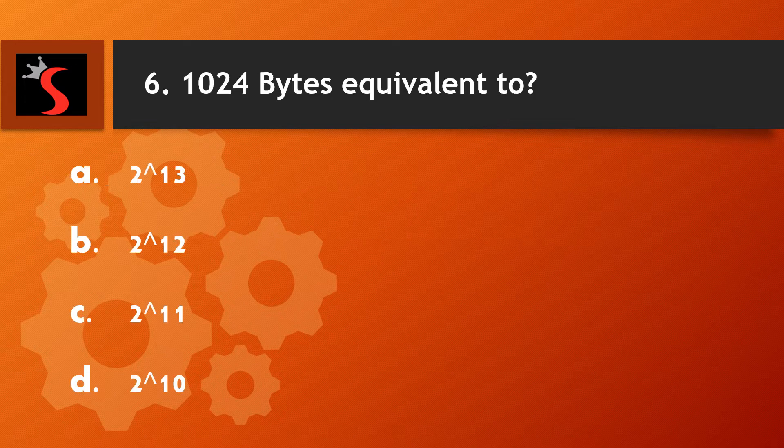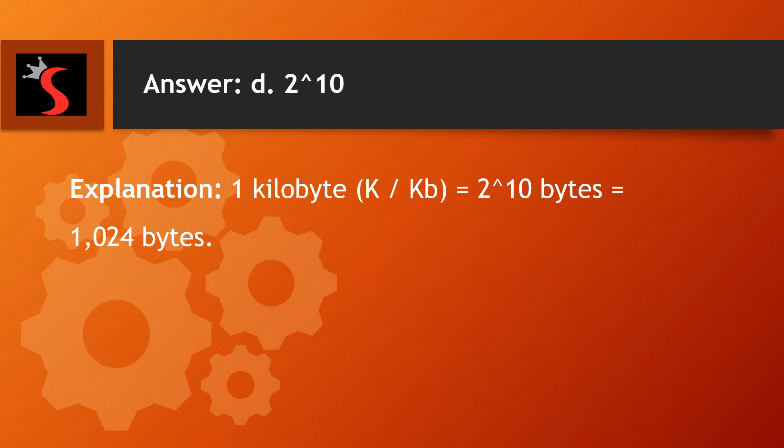The sixth question is: 1024 bytes is equivalent to? A. 2 to the power 13. B. 2 to the power 12. C. 2 to the power 11. Or D. 2 to the power 10. The right answer is 2 to the power 10. Explanation: 1 kilobyte is equal to 2 to the power 10 bytes, which is equal to 1024 bytes.